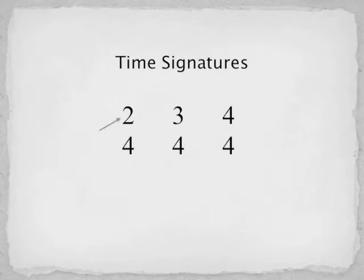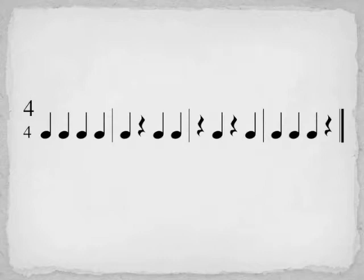Remember that the top number in a time signature tells us how many beats are in a measure. The bottom number tells us which note is getting the value of one beat. In 4-4 time, there are four quarters per measure. To label beat counts, we will assign each quarter note a number to indicate which beat we are performing.